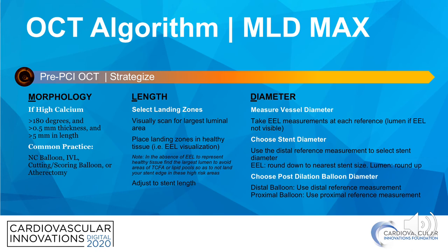For the baseline OCT, it doesn't necessarily have to be a true baseline. If it's difficult to cross with an OCT catheter due to high degree stenosis, you can pre-dilate with a small balloon — a 2.0 or 2.5 millimeter balloon — to facilitate crossing. The key is to perform OCT prior to selecting your stent so that you can optimize the stent implantation strategy and select the precise stent for that lesion. For morphology, the predominant plaque to always identify before implanting a stent is calcium. If there's a high degree of calcium, you need to incorporate a lesion preparation modality to ensure adequate stent delivery and expansion.